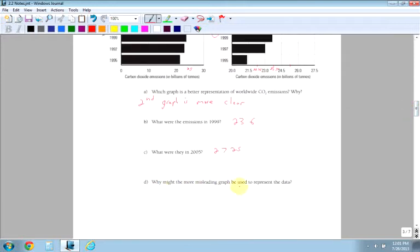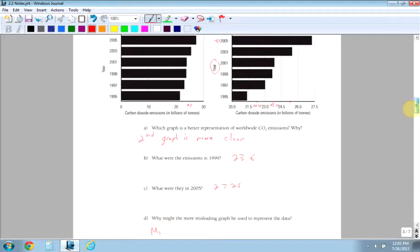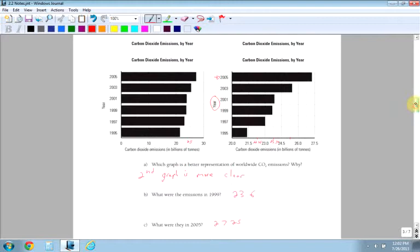Why might the more misleading graph be used to represent the data? You would probably use the first graph that's listed up there to minimize the impact, to say it wasn't that bad. It's not that much worse in 2005 than it was in 1995. Look, it's just a little bit more. But if you look at the scale, you got to see, oh well, it's actually going up by pretty big jumps. Whereas this one, you can see right away, oh my goodness, it's way worse than it was in 2000 or 1995.